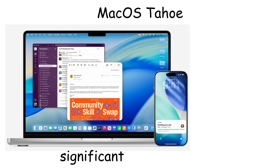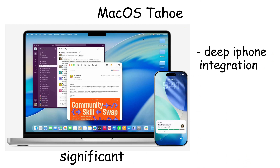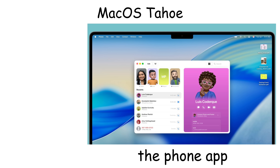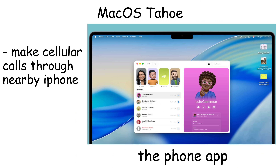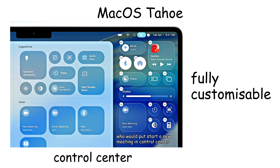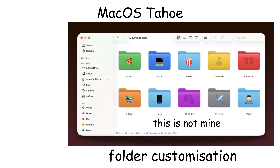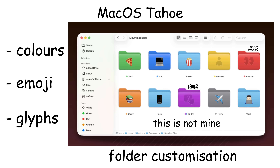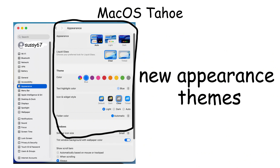What made Tahoe significant was its deep iPhone integration and customization options. It introduced a Phone app for Mac that lets users make cellular calls through their nearby iPhone, with features like call screening and hold assist. The Control Center and menu bar became fully customizable. Tahoe also introduced folder customization with colors, emoji, and glyphs, plus new appearance themes beyond just light and dark modes.